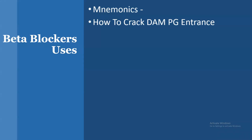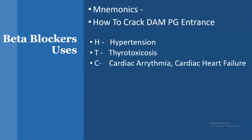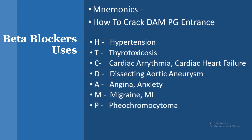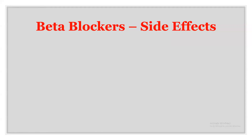Uses of beta blockers can be remembered as 'How to crack DAM PG entrance': H for hypertension, T for thyrotoxicosis, C for cardiac arrhythmia and heart failure, D for dissecting aortic aneurysm, A for angina and anxiety, M for migraine and myocardial infarction, P for pheochromocytoma, G for glaucoma, and E for essential tremors.